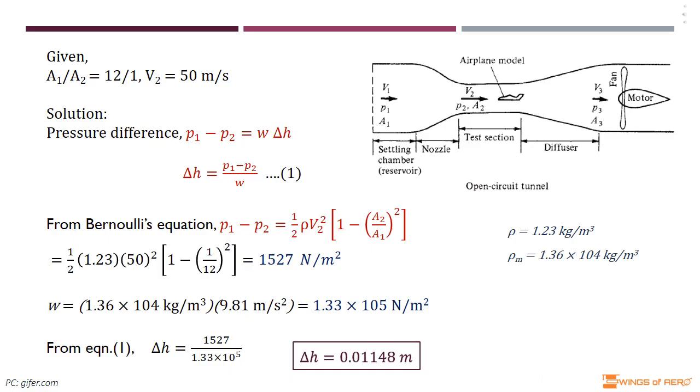Given data: the nozzle to test section contraction ratio A₁/A₂ is 12/1, and the velocity flow at the test section V₂ is 50 meters per second.